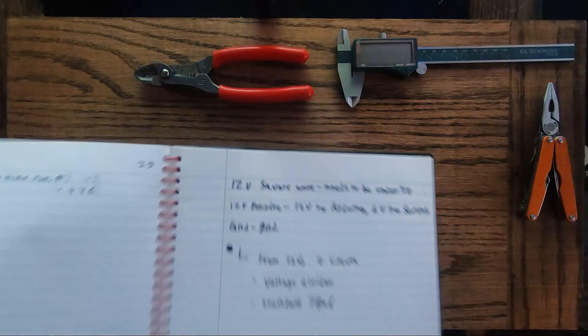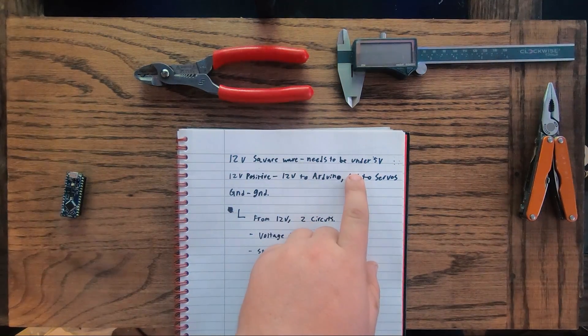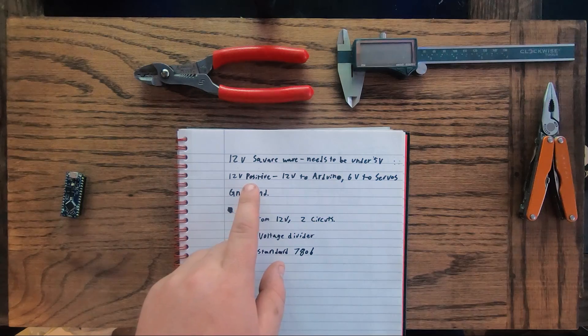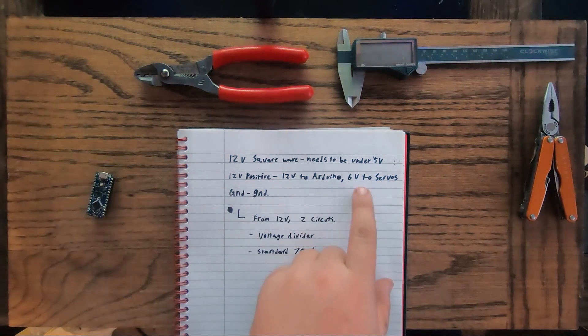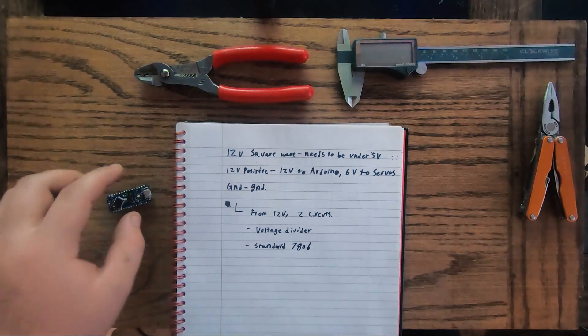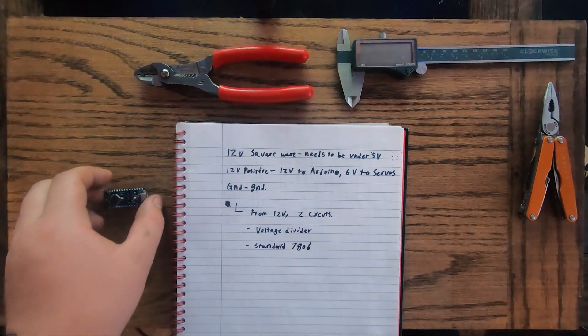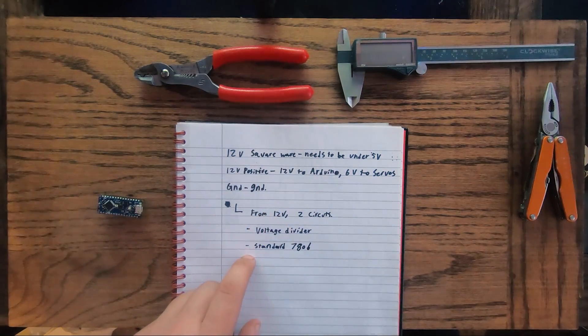So if we look here we have a 12 volt square wave coming in that needs to be dropped down to 5 volts, and we have the Arduino needing 12 volts and the servos needing 6 volts. The reason why this can't handle 12 volts is it'll overload the little analog pins and it just needs to be under 5 volts in.